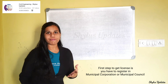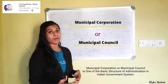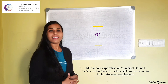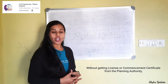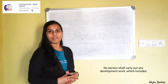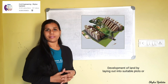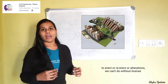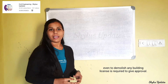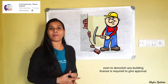The first step to get a license is you have to register in the municipal corporation or municipal council. This municipal corporation or municipal council is one of the basic structures of administration in the Indian government system. Without getting this license or commencement certificate from the planning authority, no person shall carry out any development work, which includes development of land by laying out into suitable plots, group housing schemes, or to erect, re-erect, or make any alterations. They cannot do any of this without a license.